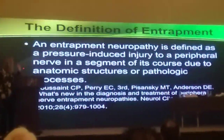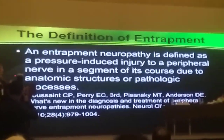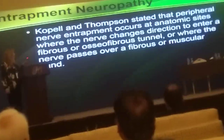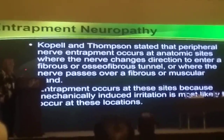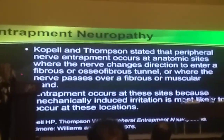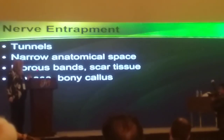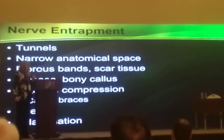Entrapment neuropathy is defined as a pressure-induced injury to a peripheral nerve in a segment of its course due to anatomic structures or pathologic processes. These entrapment neuropathies occur at anatomical sites where the nerve changes direction into a fibro-osseous tunnel, or where a nerve passes over a fibro-osseous or muscular band. Entrapment occurs at these sites because of pressure, and can involve narrow anatomical spaces, bands or scar tissue, bony callus, or compression from braces, casts, edema, or inflammation.